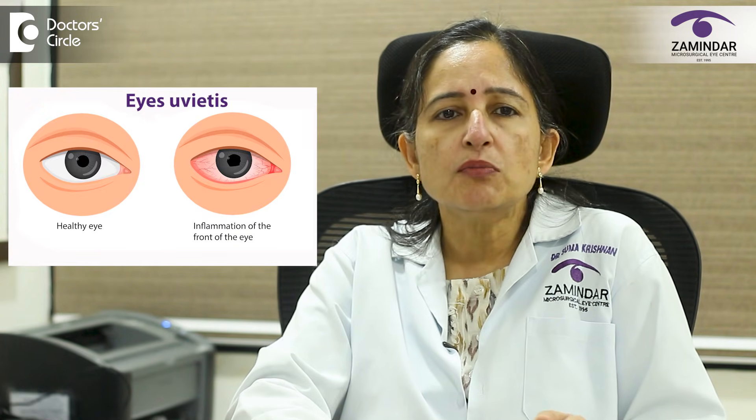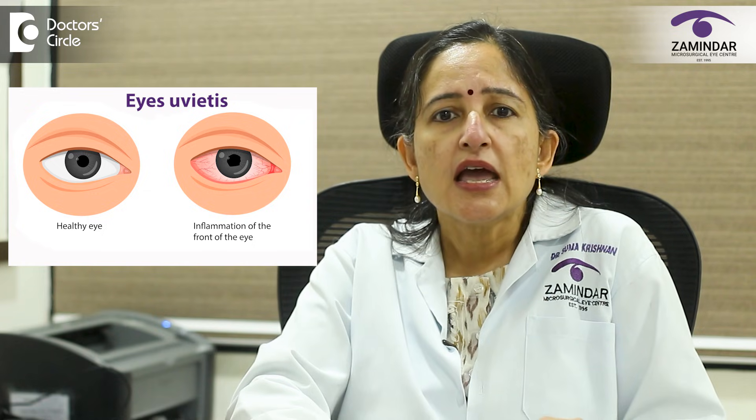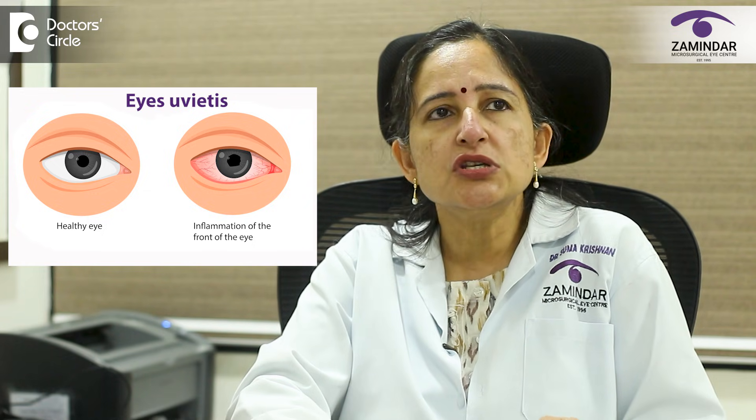Another cause for floaters is a condition called uveitis. The eyeball has three layers and the middle layer is called the uvea. An inflammation of the middle layer of the eye can also cause floaters, especially when it affects the posterior or back part of the uveal tract. Uveitis is not just an eye problem — it may signal an underlying systemic disease. Proper evaluation often requires blood tests, imaging or referral to a rheumatologist, physician or infectious disease specialist. Early diagnosis and treatment of systemic disease can prevent recurrences and protect vision.